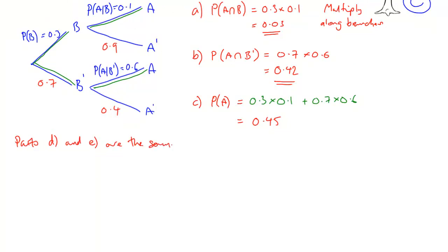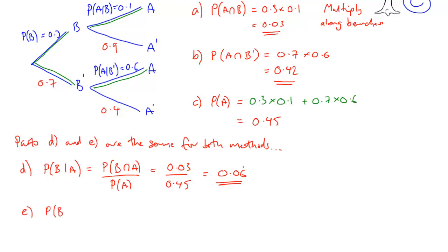Right, parts D and E now. To do these, it doesn't matter which method you've used for the first part. It's a fairly straightforward application of the multiplication rule for conditional probability. And it's using it in its fraction form. So straightforward. The probability of B given A is the probability of B intersection A divided by the probability of A. And we know both of those, we've worked them out already. So that's fairly straightforward to calculate.